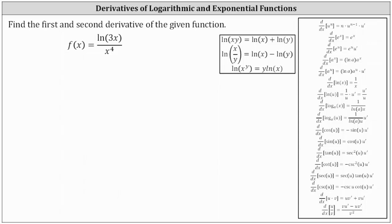We want to find the first and second derivative of the given function. First, notice how we could rewrite natural log of three times x as natural log three plus natural log x using the product property of logarithms shown here at the top, but I'm going to go ahead and leave the function as natural log three x. And because we have a quotient, we know we need to apply the quotient rule of differentiation to determine the first derivative.